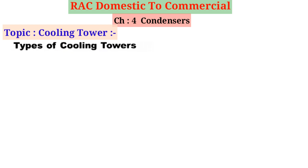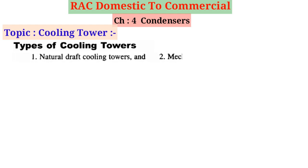Now, types of cooling towers. Cooling towers are mainly divided according to their method of air circulation into two groups: 1. Natural draft cooling towers, and 2. Mechanical draft cooling towers.